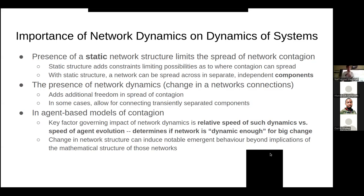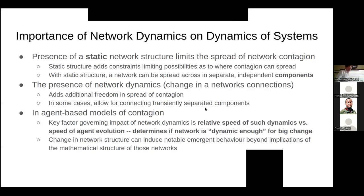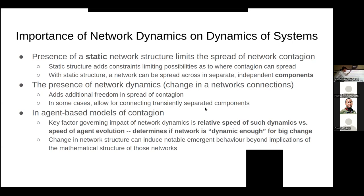The presence of a static network structure - a fixed and invariant network structure - limits the spread of network contagion. It constrains the possibilities as to where contagion can spread. With a static structure, maybe it'll spread across a component, but it can't jump over to another component of the network - another island of the network, as it were. But the presence of network dynamics, including individuals who bridge sometimes to one island and sometimes to another, can lead to the ability for contagion to spread more broadly across the network and connect what were separate components.